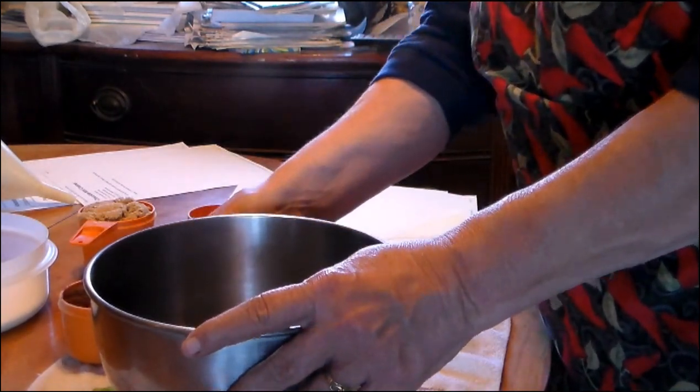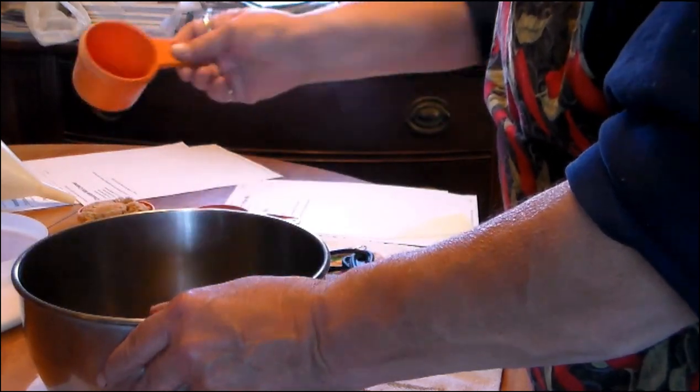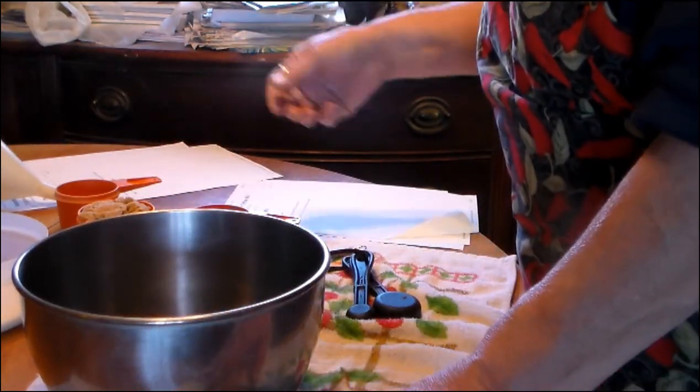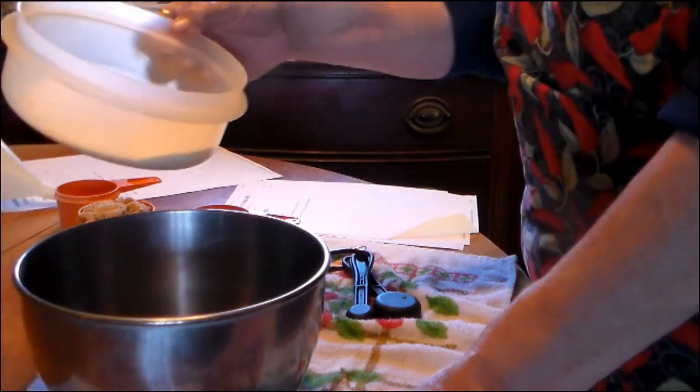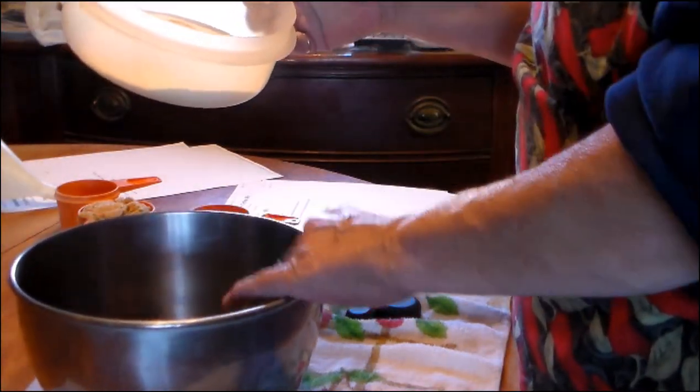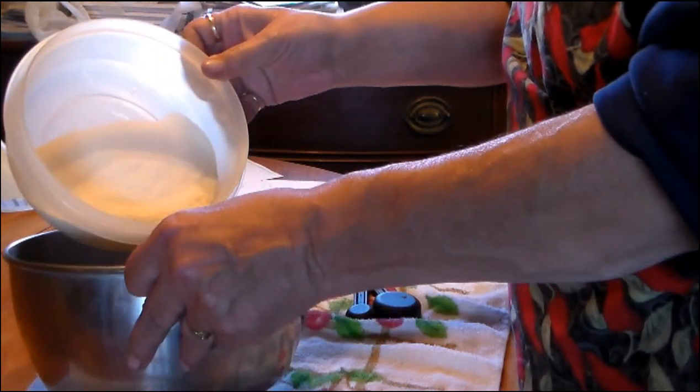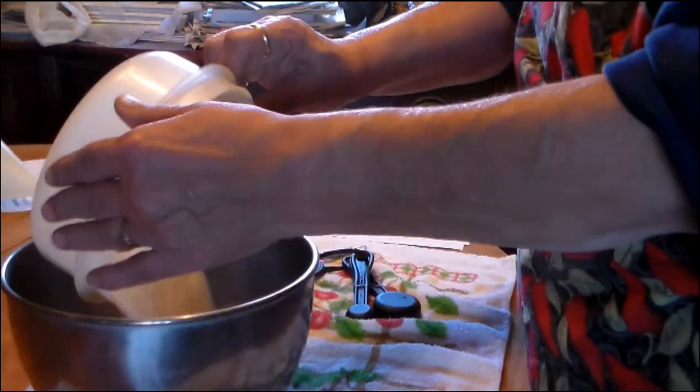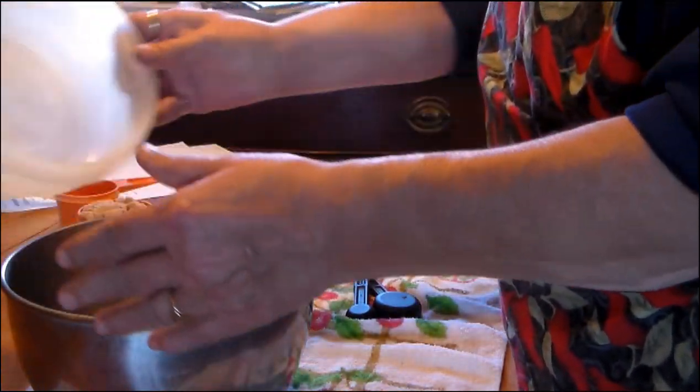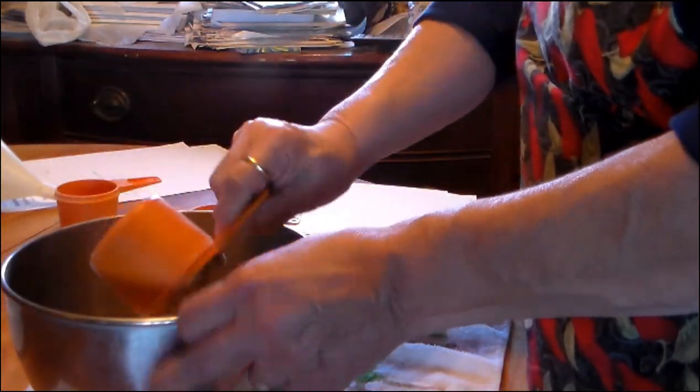Two thirds of a cup of instant coffee. I've already pre-measured all these for you. A cup of the non-dairy creamer. Now you can use any kind. Same with this. If you want to use decaffeinated type instant coffee, you can. This is a cup of the non-dairy creamer and a cup of brown sugar.